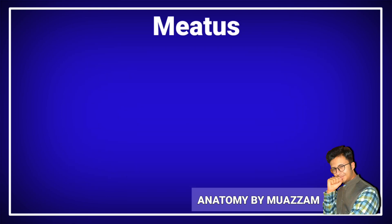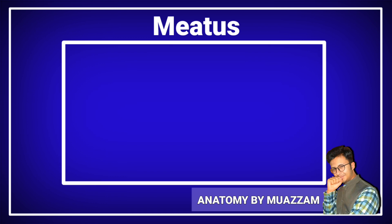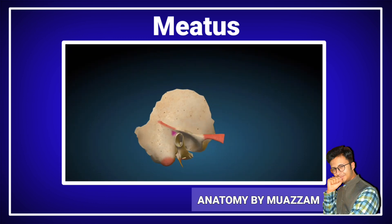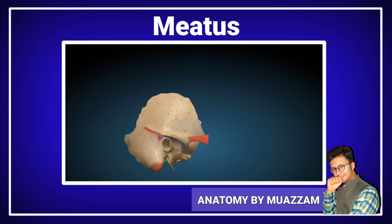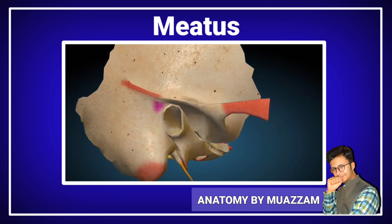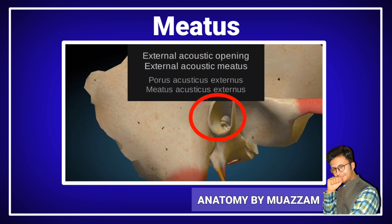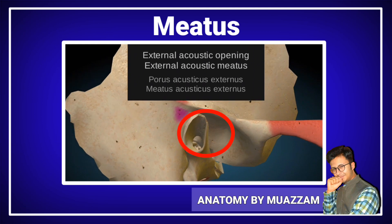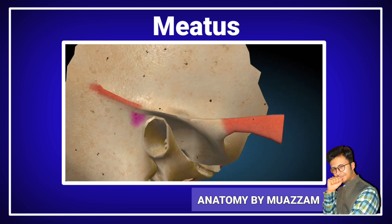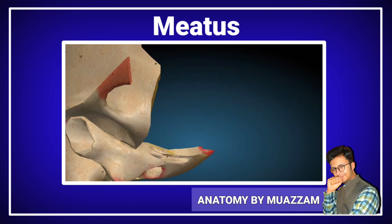The meatus. The meatus is also an elongated opening. The two important examples are the external acoustic meatus and the internal acoustic meatus of the temporal bone. The external acoustic meatus is present on the lateral side of the skull on the temporal bone.